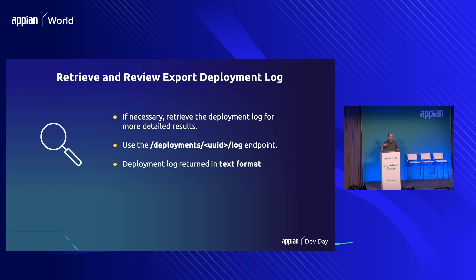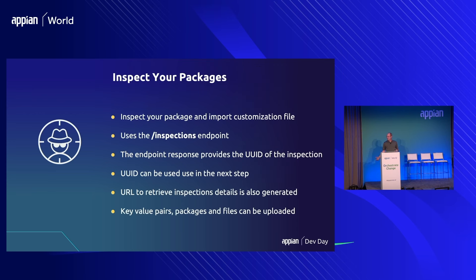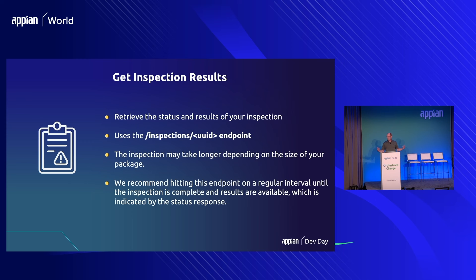Importing and deploying your applications and packages is essentially the reverse process. You'll want to inspect your packages before importing and deploying to the destination environment. When you trigger an inspection, you provide it with all the files you want to upload — key-value pairs, data values, packages, any other files — and they get uploaded during the inspection process. That process kicks off in the background, and you loop and review the log by pulling every 10 to 20 seconds with the inspection's unique ID to make sure everything worked as expected.